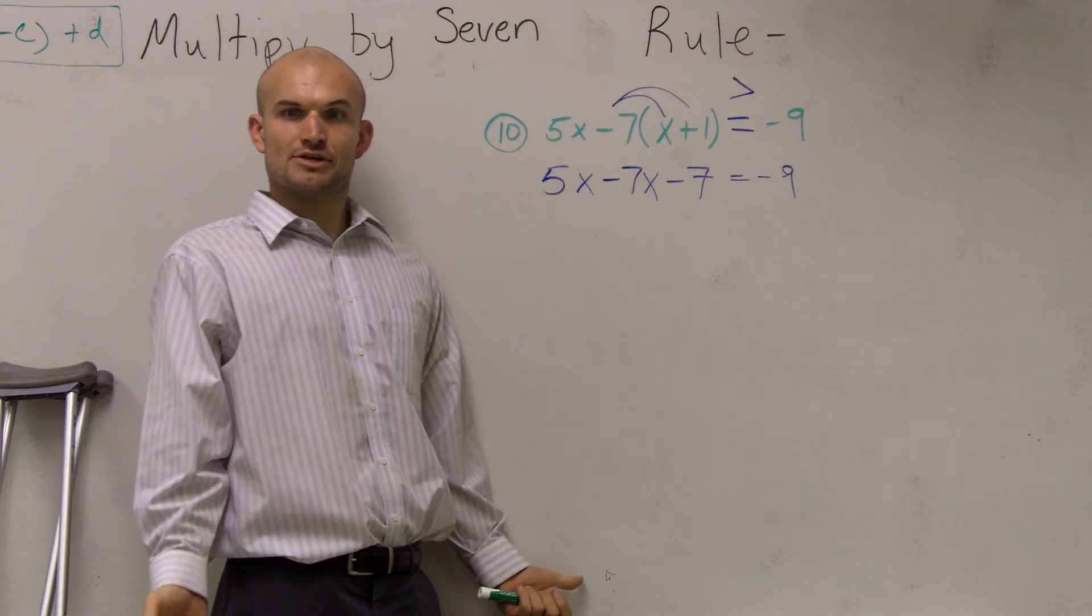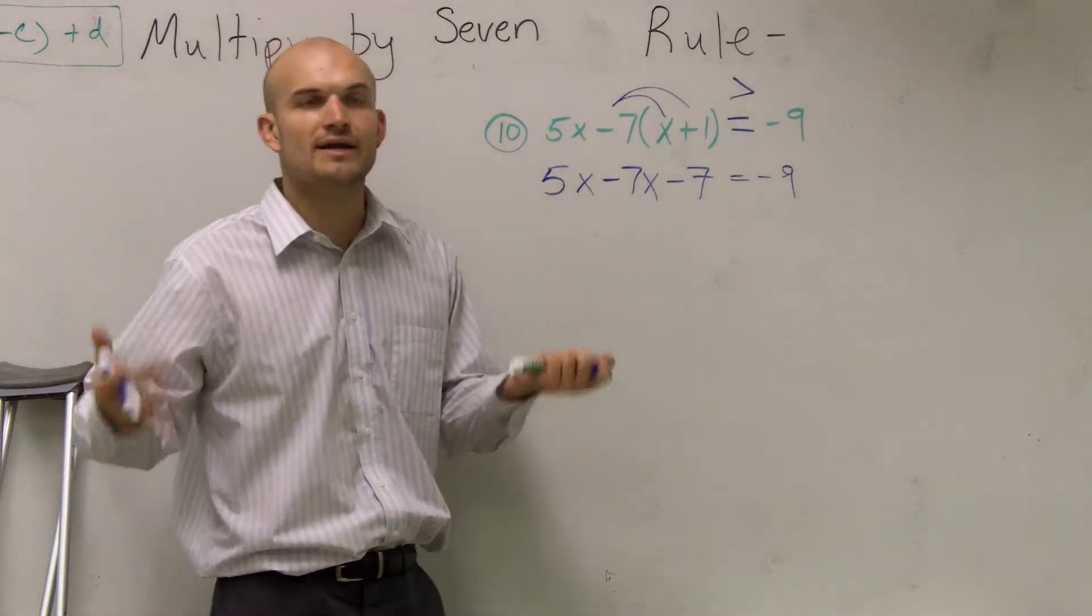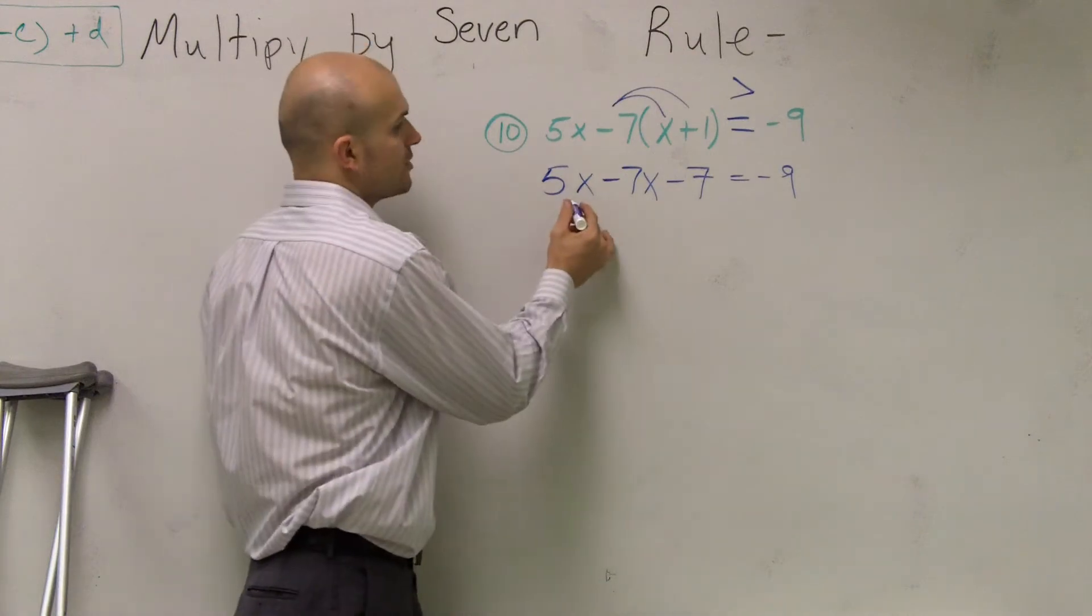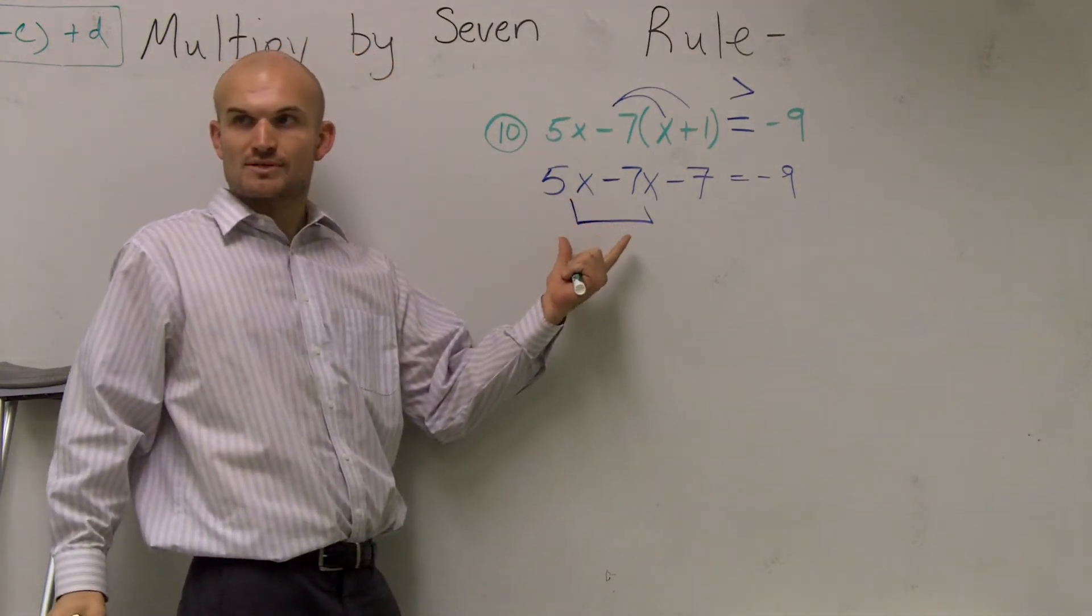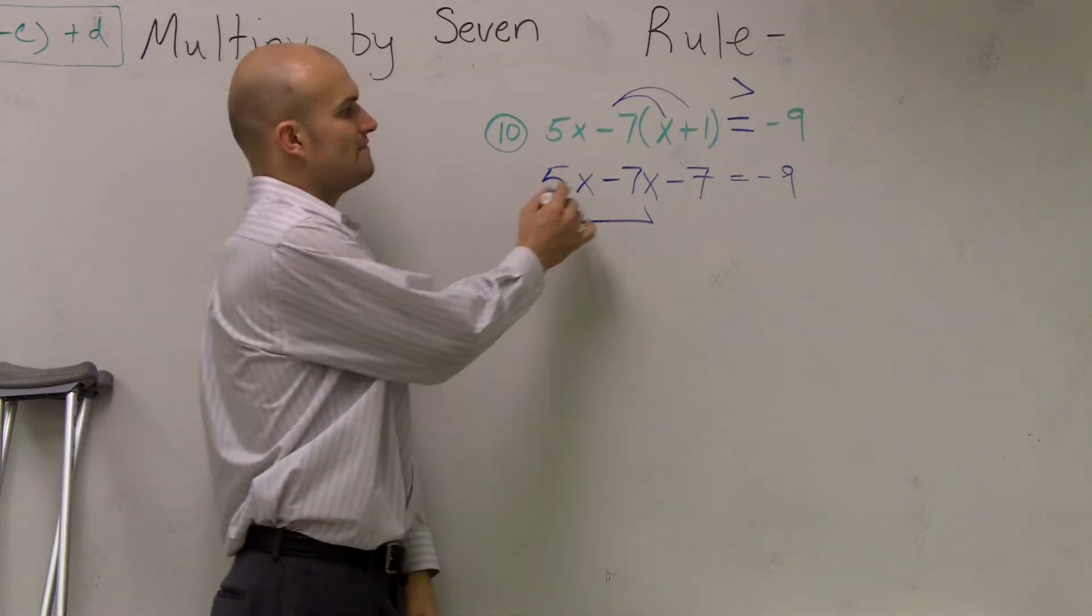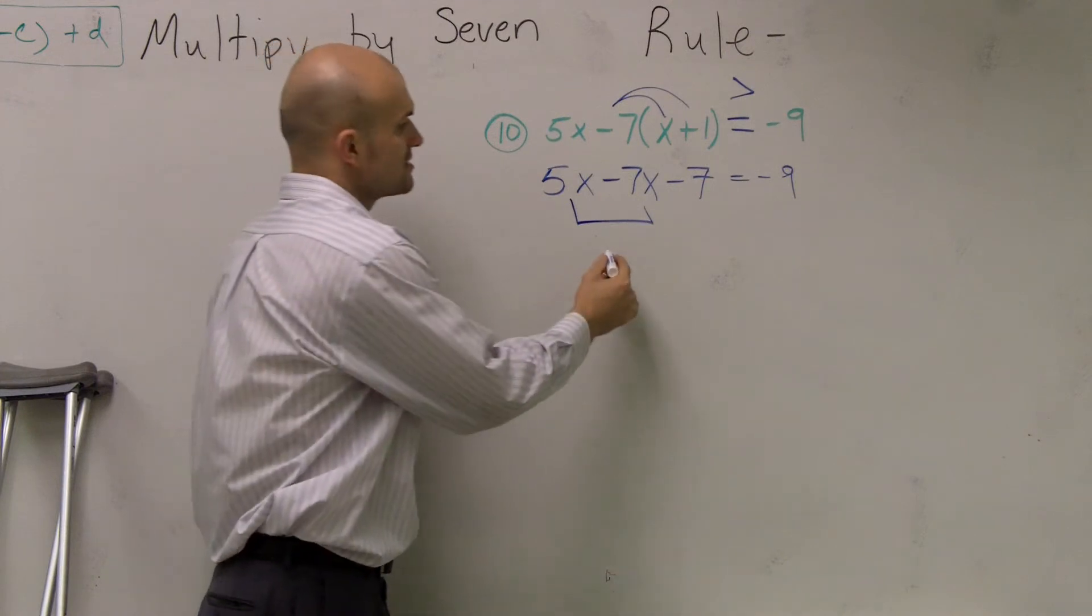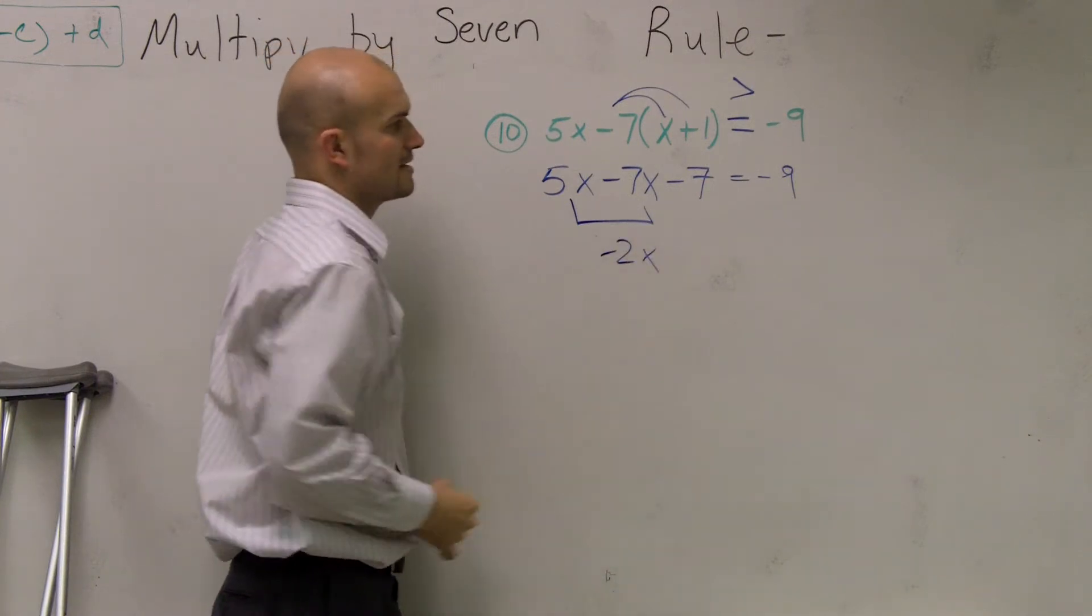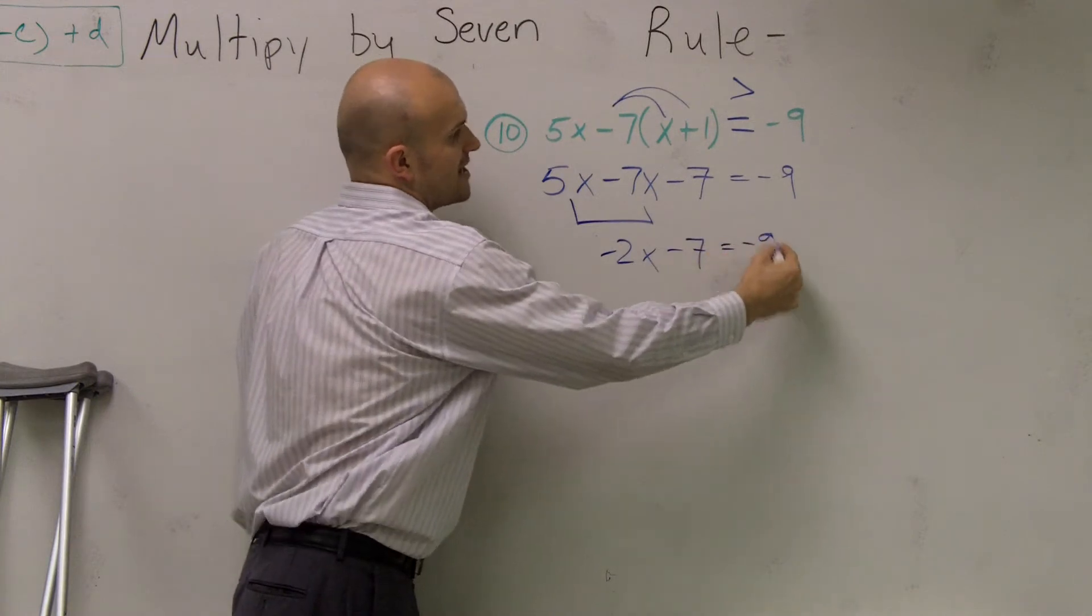Now the next thing we need to do, like any other problem, is we need to say, how can I simplify this? How can I combine like terms? Well, you guys notice these two terms are like terms, right? They both have an x. So I have 5x minus 7x. So 5x minus 7x is a negative 2x. Minus 7 equals negative 9.